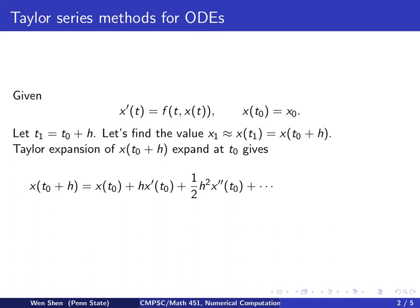What we do is write out Taylor expansion for this function x depending on t, evaluate at t0 plus h, and expand it at t0. We have x at t0 plus h expanded at t0 is x(t0) plus h times x prime at t0, plus one half h square times second derivative at t0, and so on and so forth.